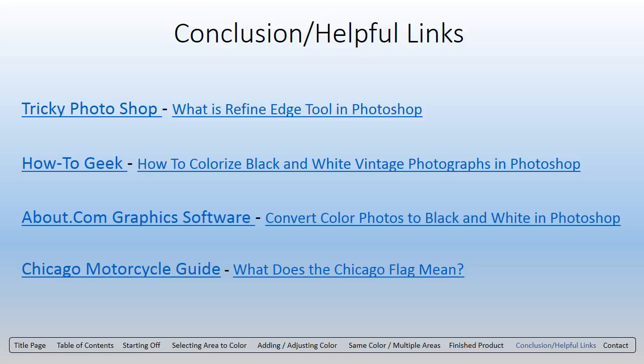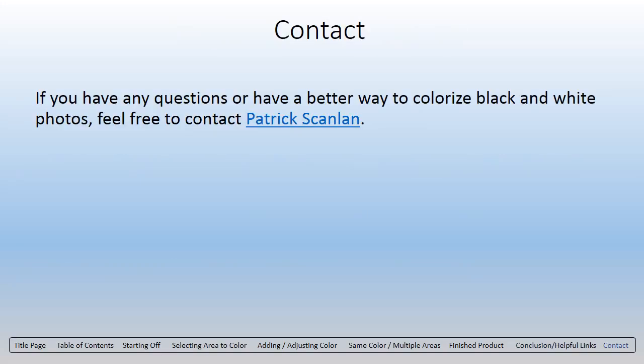Lastly, since I have been asked about the Chicago flag numerous times, I have included a link that describes the symbolism of each arch of the flag. Well, that's it. If you have any questions, feel free to email me. If you have found a better method of colorization, feel free to email me the better way — I'm still learning as you are. This concludes this presentation. Good luck and have fun. Thank you.